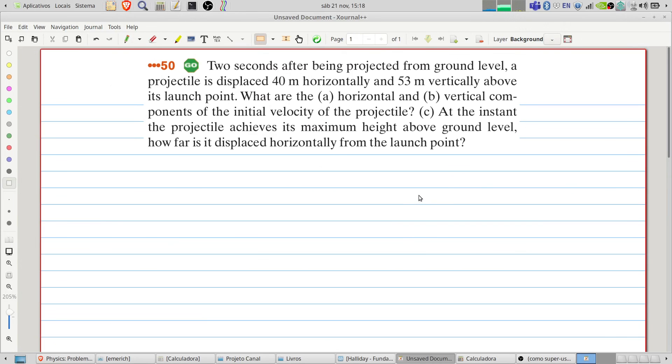Two seconds after being projected from ground level, a projectile is displaced 40 meters horizontally and 53 meters vertically above its launch point. What are the horizontal and vertical components of the initial velocity of the projectile? At the instant the projectile achieves its maximum height above ground level, how far is it displaced horizontally from the launch point?